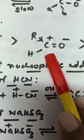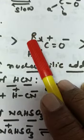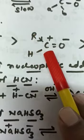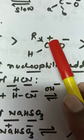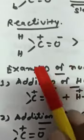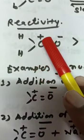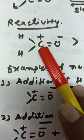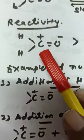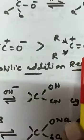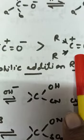In case of aldehyde, only one alkyl group or electron-donating group is present. So, the magnitude of positive charge is greater than ketone. In formaldehyde, the magnitude of positive charge is highest. So, the reactivity order of aldehyde is more than ketone. This is the first cause explained by inductive effect.